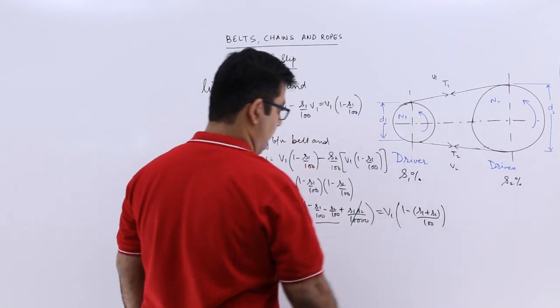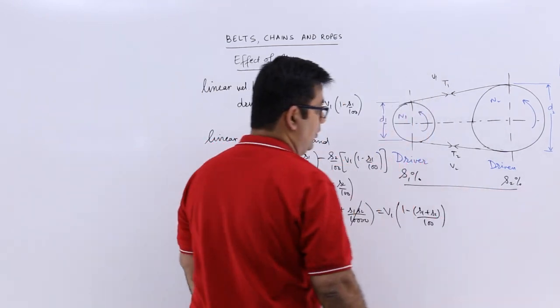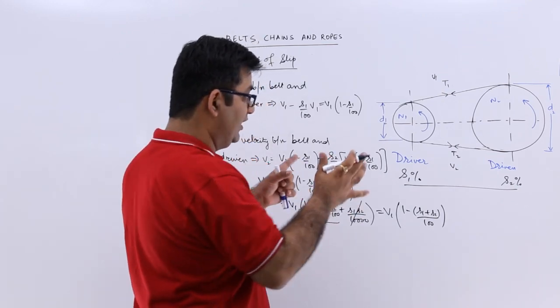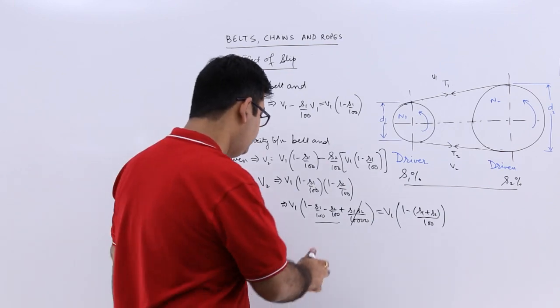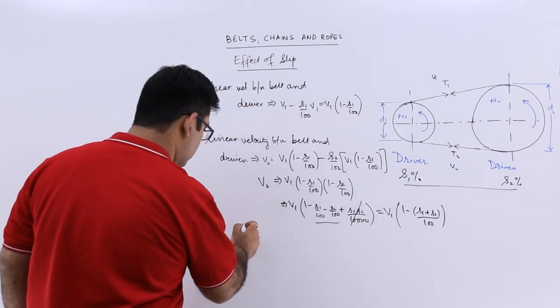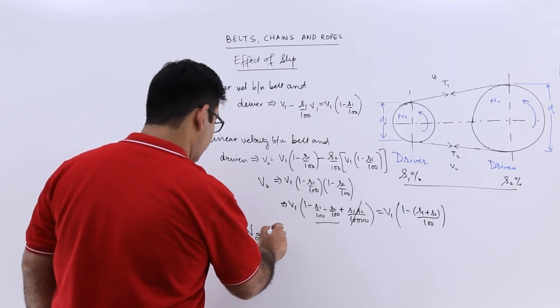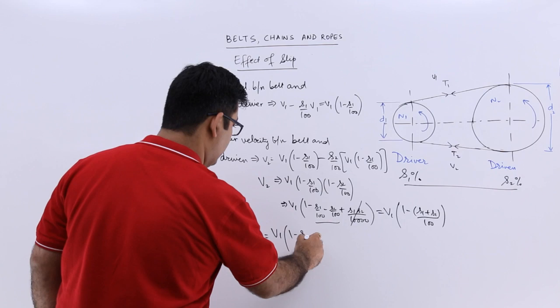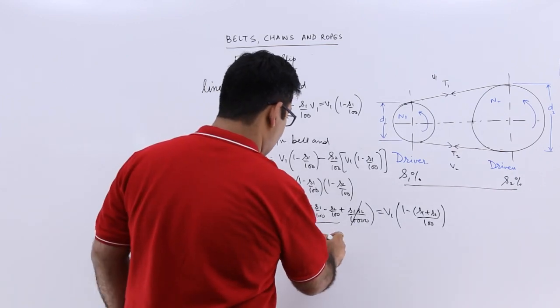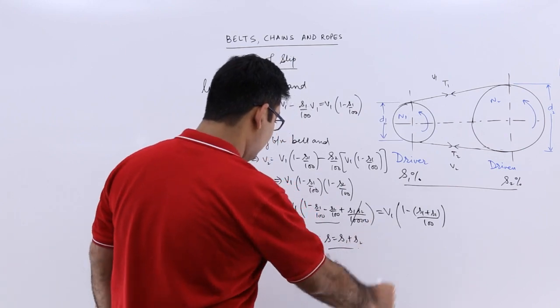Now s1 plus s2 is the total slip. You can just add these two percentage values and that will be the total slip in percentage for the entire system. So your v2 will now become v1 times (1 minus s/100) where the value of s is s1 plus s2.